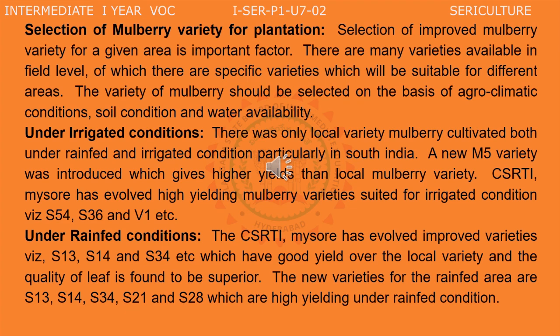Under irrigated conditions, there was only a local variety of mulberry cultivated both under rainfed and irrigated conditions, particularly in South India. A new M5 variety was introduced which gives higher yields than the local mulberry variety. CSR&TI in Mysore has evolved high-yielding mulberry varieties suited for irrigated conditions, namely S54, S36, and V1.